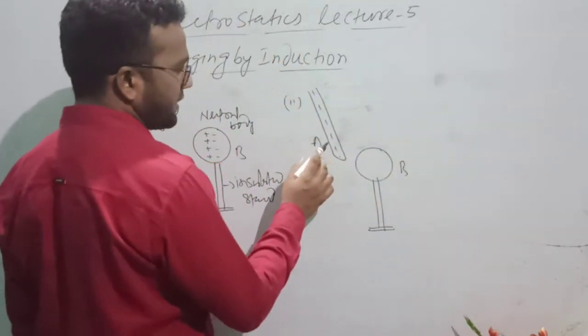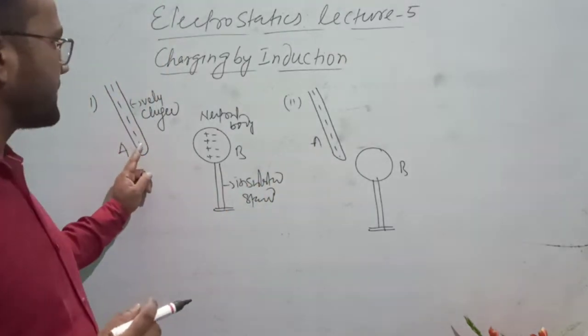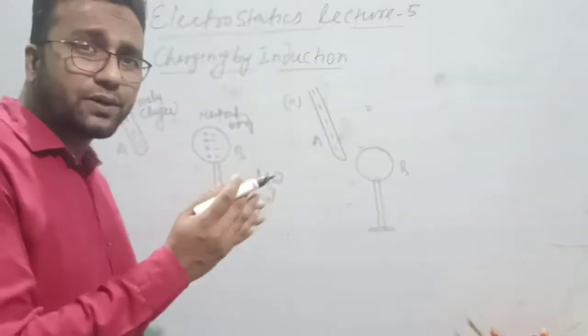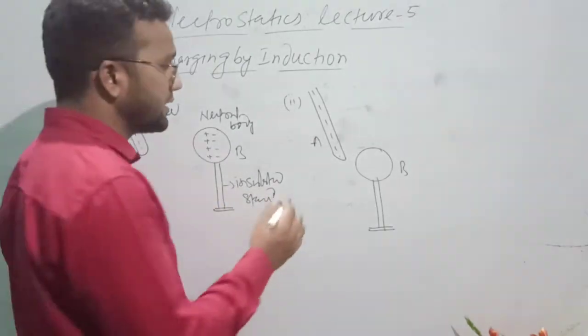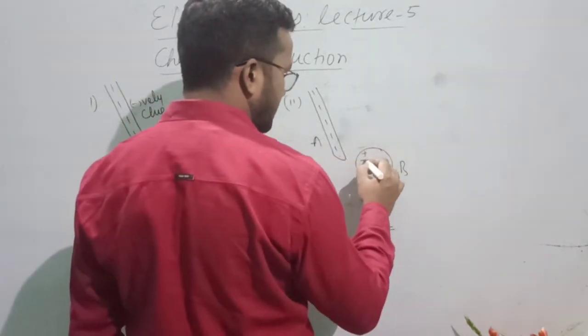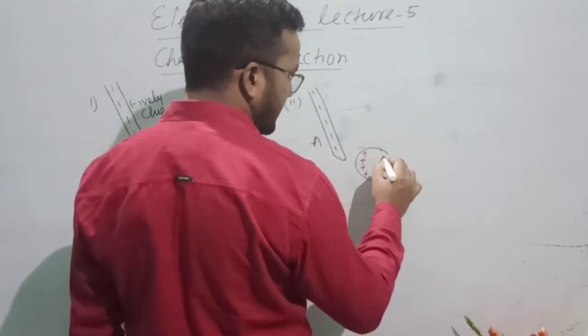Now, here we have the negative charge from the rod. It will attract the positive charge. Unlike charges attract each other - positive charge is attracted and negative charge is repelled.